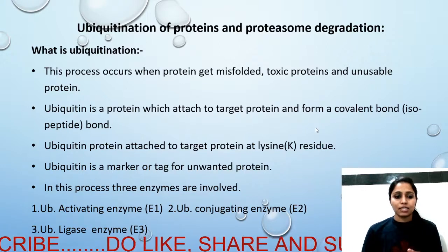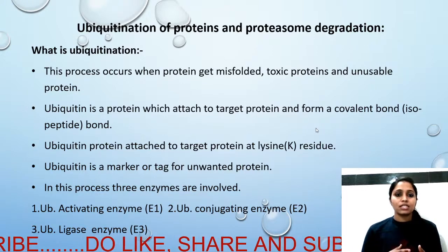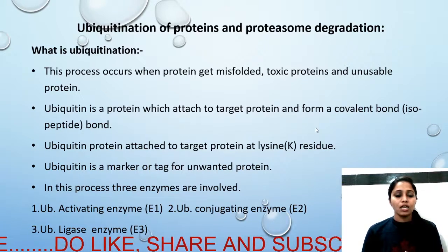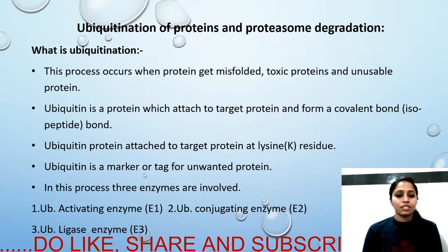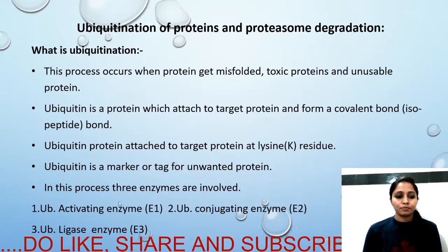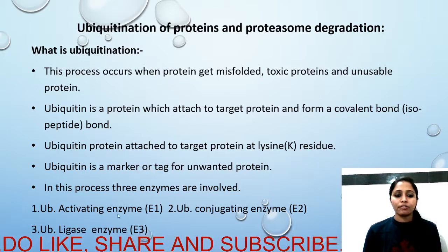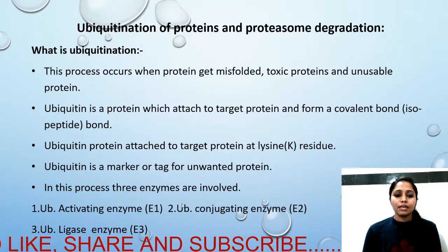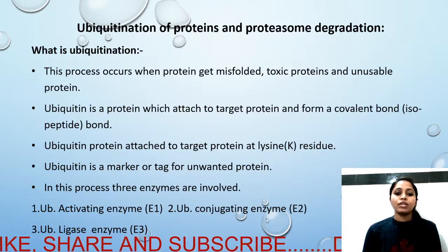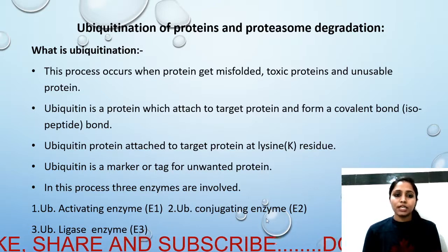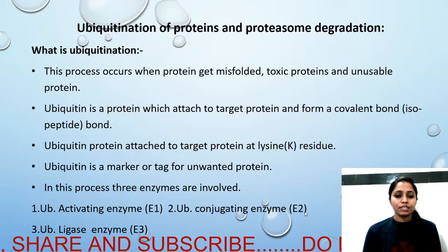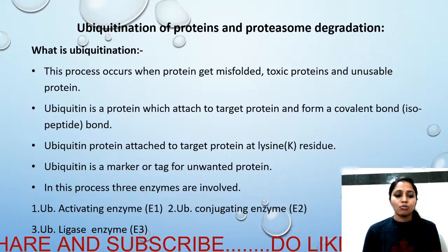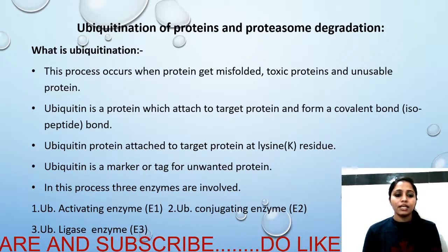In this process, there are enzymes involved. The first enzyme is the ubiquitin-activating enzyme, which is the E1 enzyme. The second is the ubiquitin-conjugating enzyme, which is the E2 enzyme. The third is ubiquitin ligase, which is the E3 enzyme.